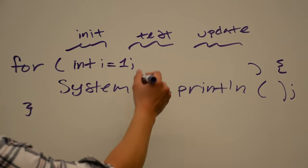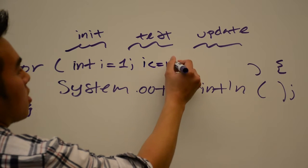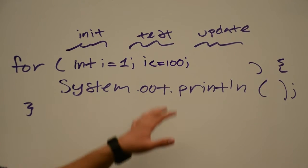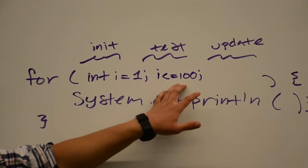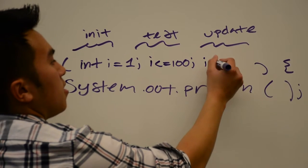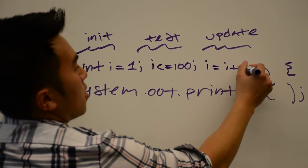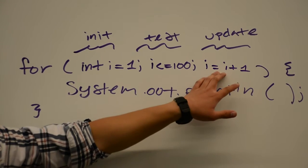Next for our test, I'm going to make our test i is less than or equal to 100, and I'm going to make our update increment i by 1.